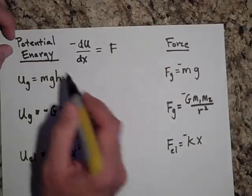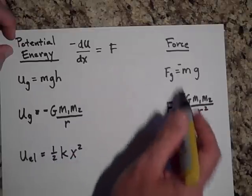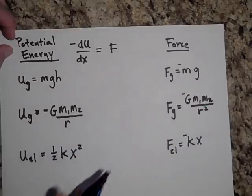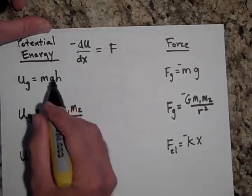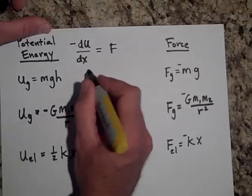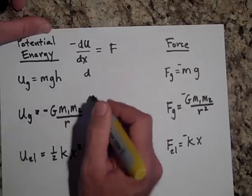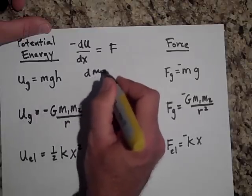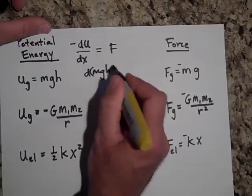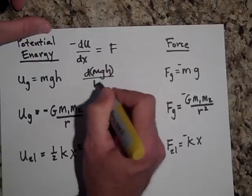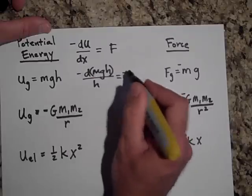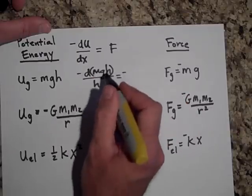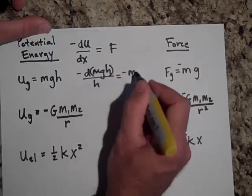So what links this row and this row is a derivative, a negative derivative with respect to a distance. So do you see that if I take the derivative of U, the derivative of MGH with respect to H, watch what happens when I do that, the negative derivative, I will get, well, that turns out to just give me MG.